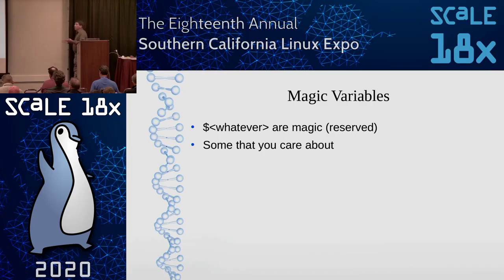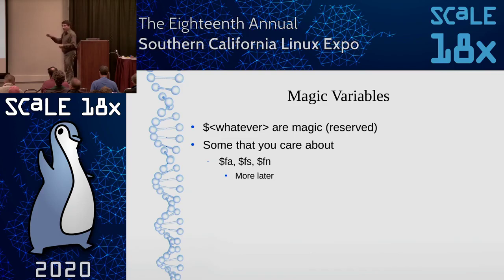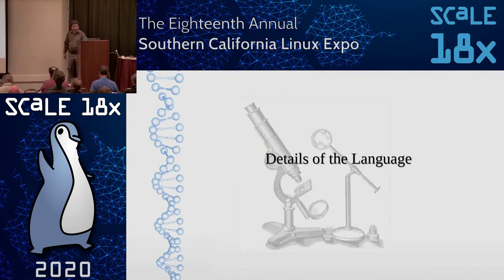For variable naming, it's standard programming naming except for the ones that start with a dollar sign—those are magic, or reserved, and a few are used for special purposes. The ones you care about are $fa, $fs, and $fn—I'll explain those later. Also $t, another one I'll explain later.